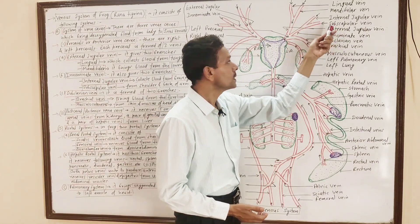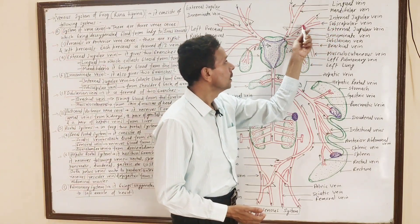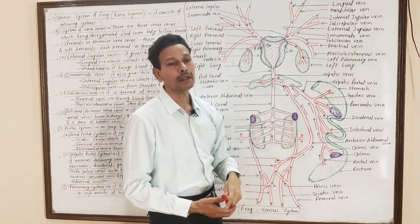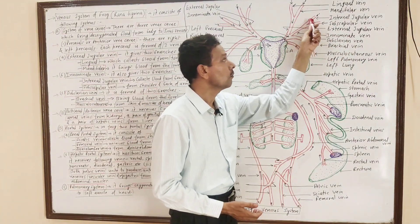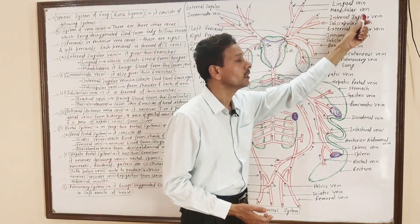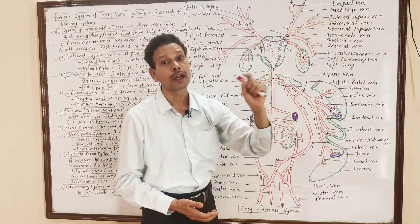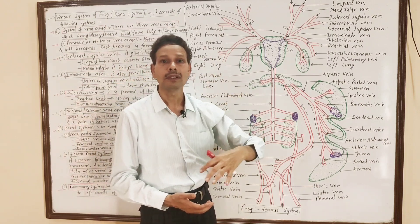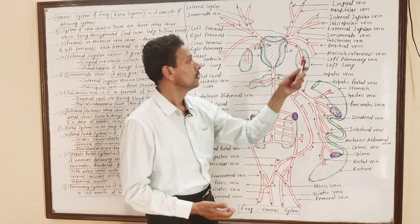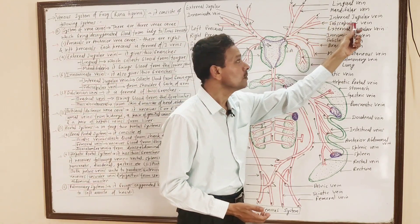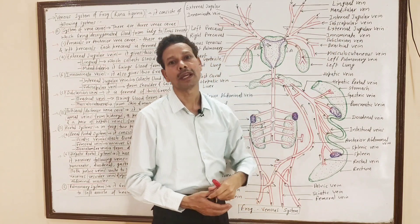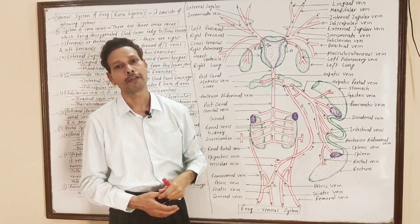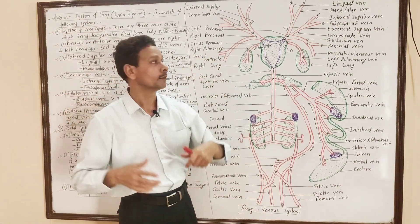The innominate vein has two branches: one is the internal jugular vein, which brings blood from the brain and eyes; and the subcapular vein, which brings deoxygenated blood from the shoulder region.